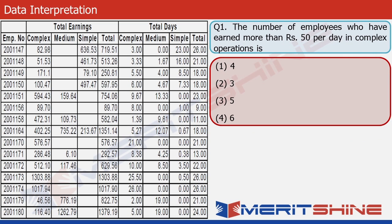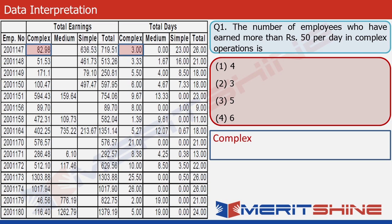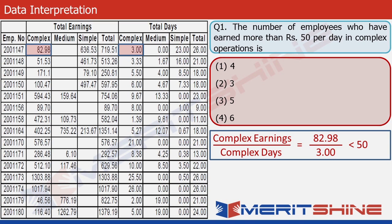We need to find the number of employees who have earned more than 50 rupees per day in complex operations. We will divide each employee's earnings from complex work by the number of days worked on complex operations. We don't need to find the exact number — we just need to check if the result is above 50. For example, 3 times 50 is 150, so if the numerator is less than 150, it does not qualify.